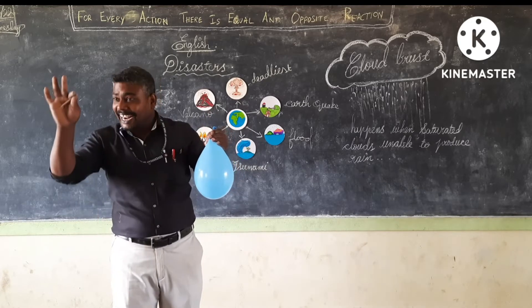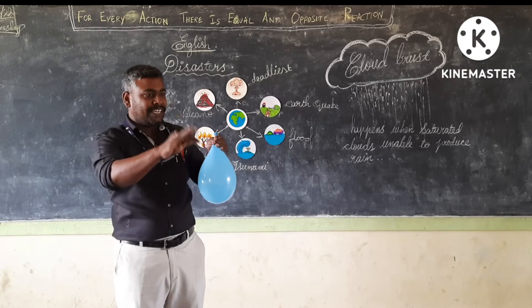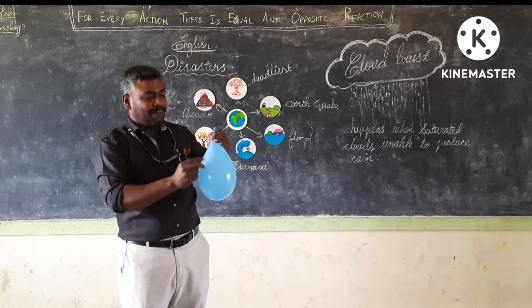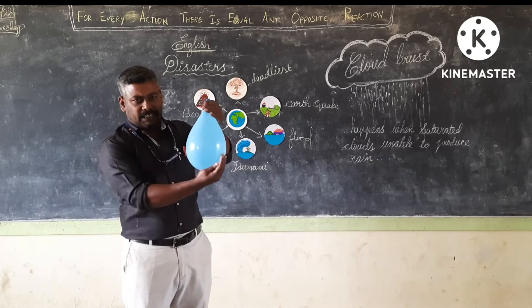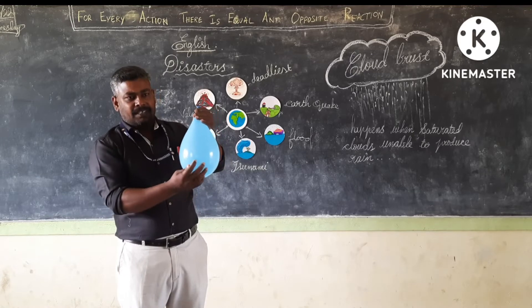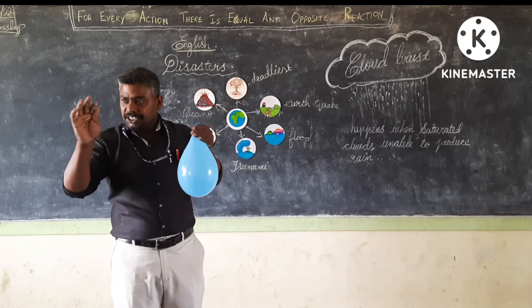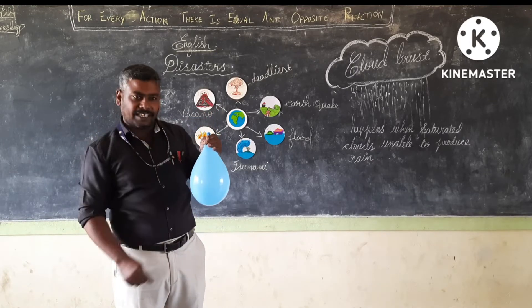We get rain when the cloud is saturated. Only a saturated cloud gives us rain.